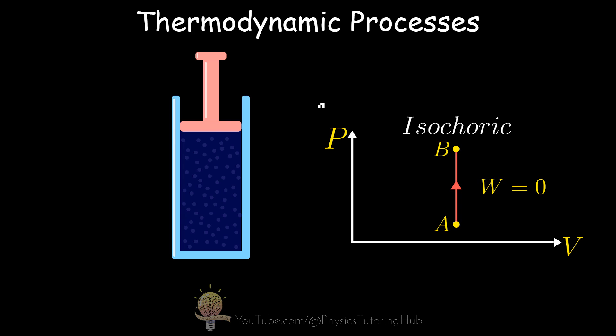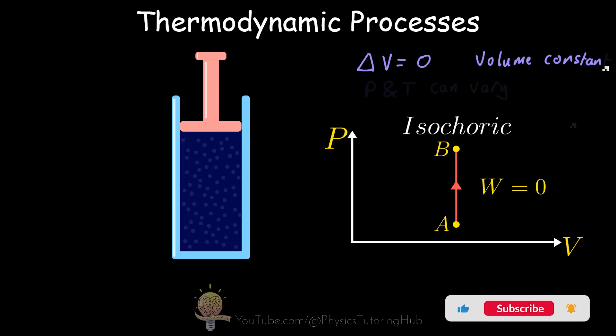The next type of thermodynamic process is an isovolumetric or isochoric process. These two terms can be used interchangeably, but for the remainder of this lesson I'm going to call it an isochoric process. This type of process is where the volume remains constant and the pressure and temperature can vary.